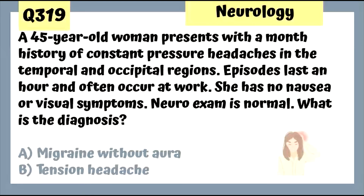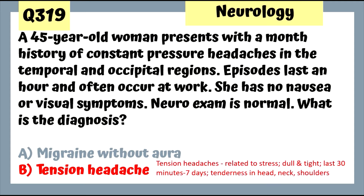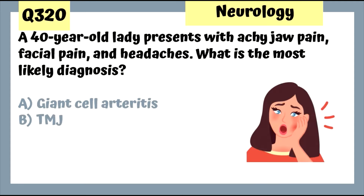Question 319: A 45-year-old woman with a month of constant pressure headaches in the temporal and occipital regions lasting an hour and often occurring at work, no nausea or visual symptoms — the fact that these occur at work indicates a tension headache. She is likely stressed. Often there is muscle tenderness in the head, neck, and shoulders.